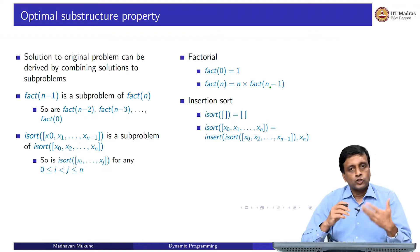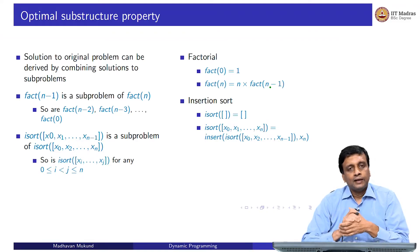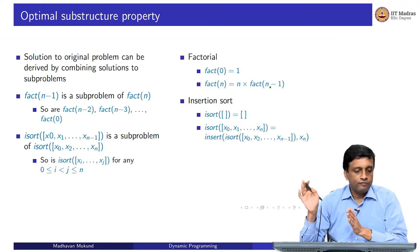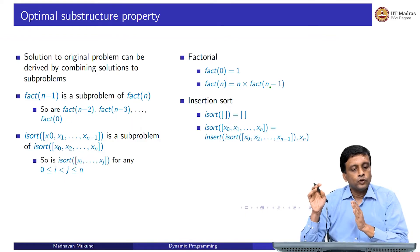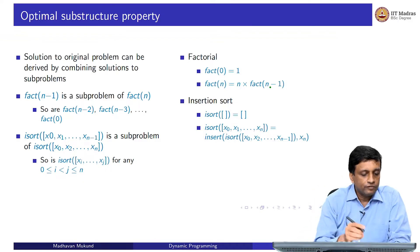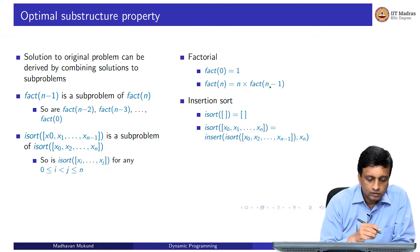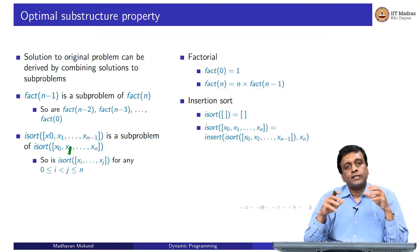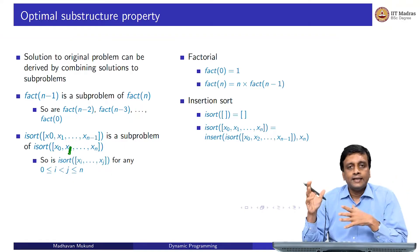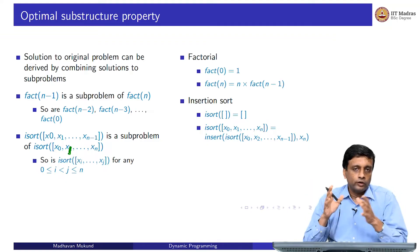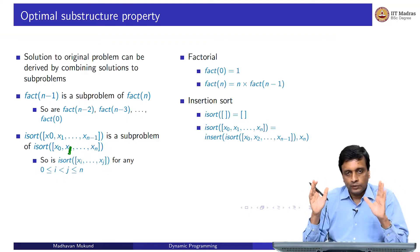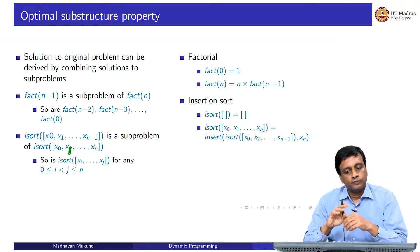Similarly, if I want to sort a list by insertion sort, I need to be able to sort the prefix from 0 to n minus 1, and then I can sort from 0 to n. In general, I might need to sort different segments, so I should think of any sequence xi to xj as a sub-problem.